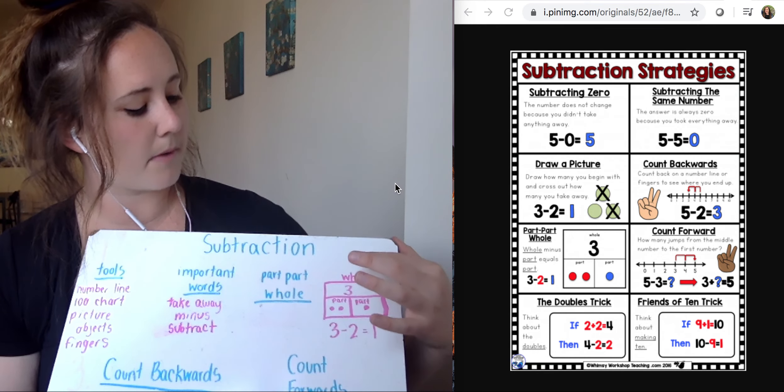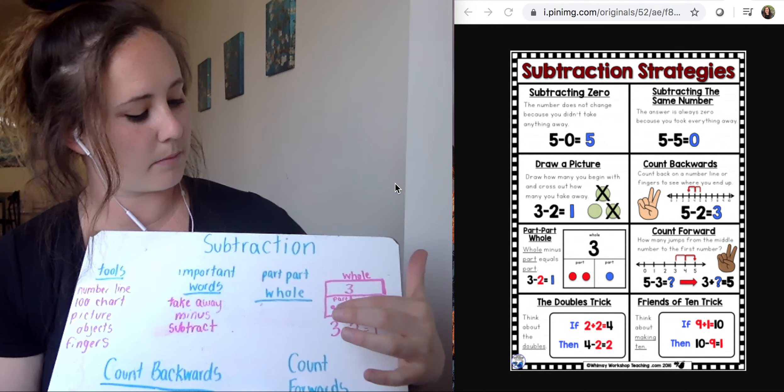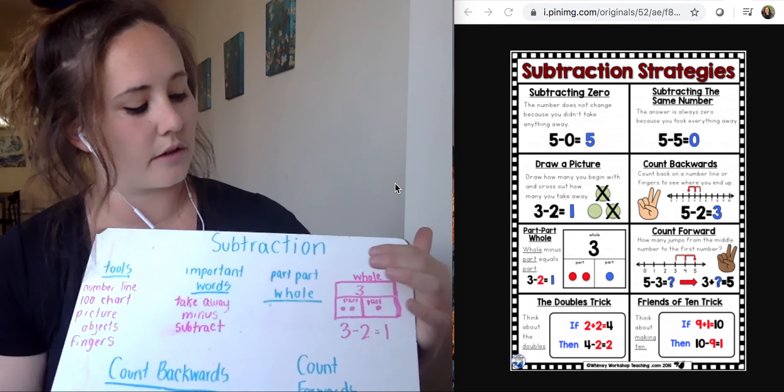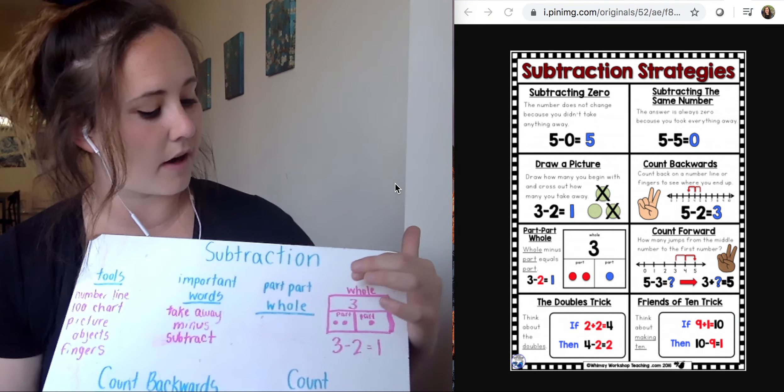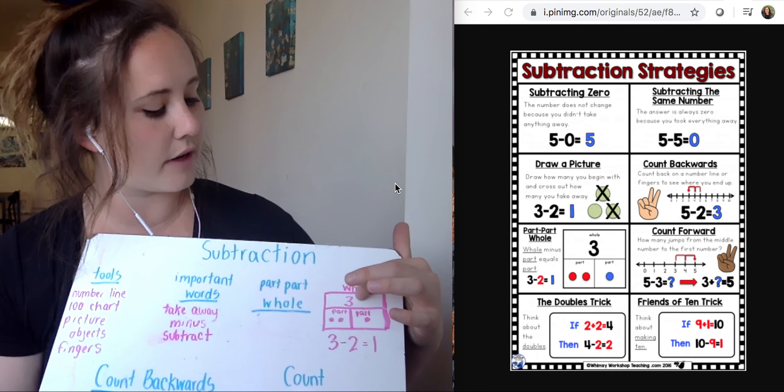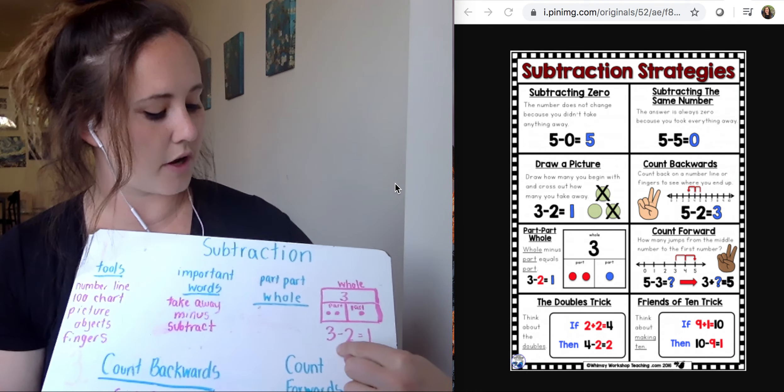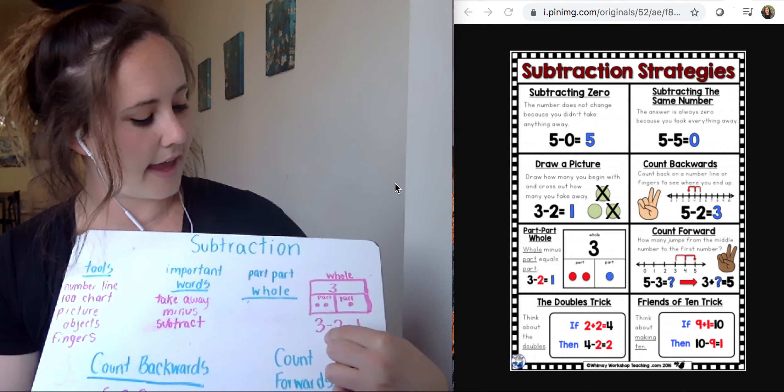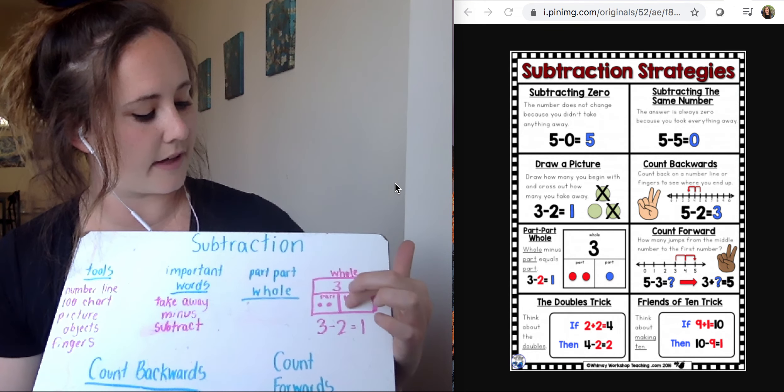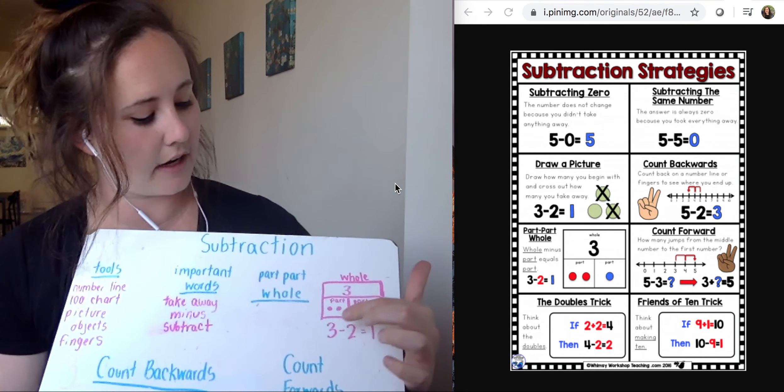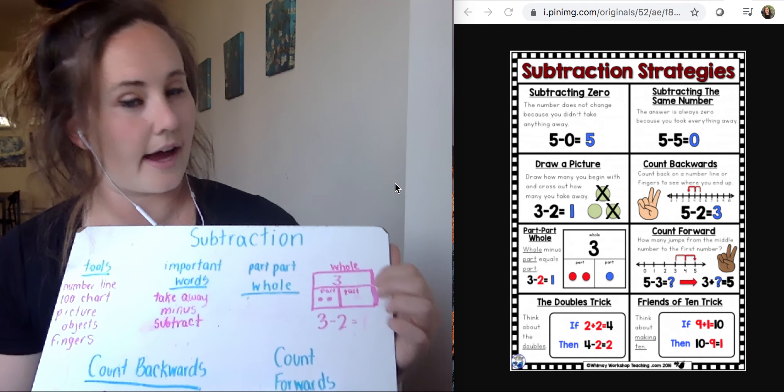So from my model, from my part-part model, I know that three has to be the first number since we're subtracting. We're not going to think about our whole-whole-part addition problems. Now we're just thinking about our subtraction. So I know three is my whole number and I'm taking away from three. So I put three first in my number sentence. And then I'm taking away two. Let's pretend that one isn't there. So I'm taking away two, and then I need to figure out how many are left.